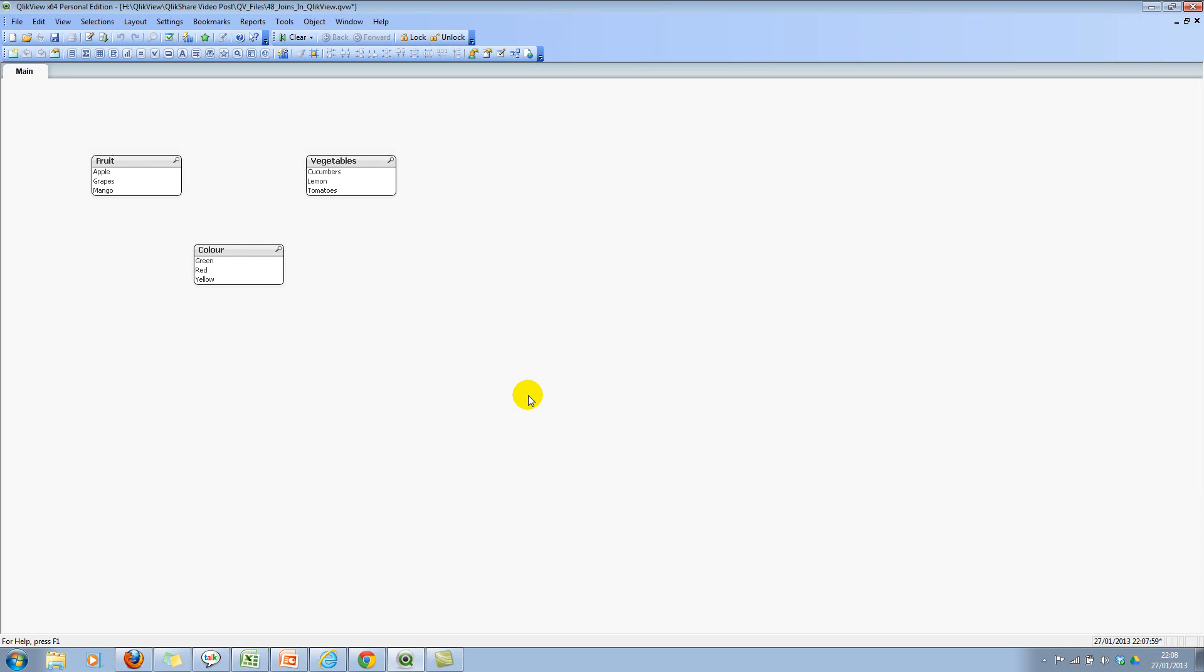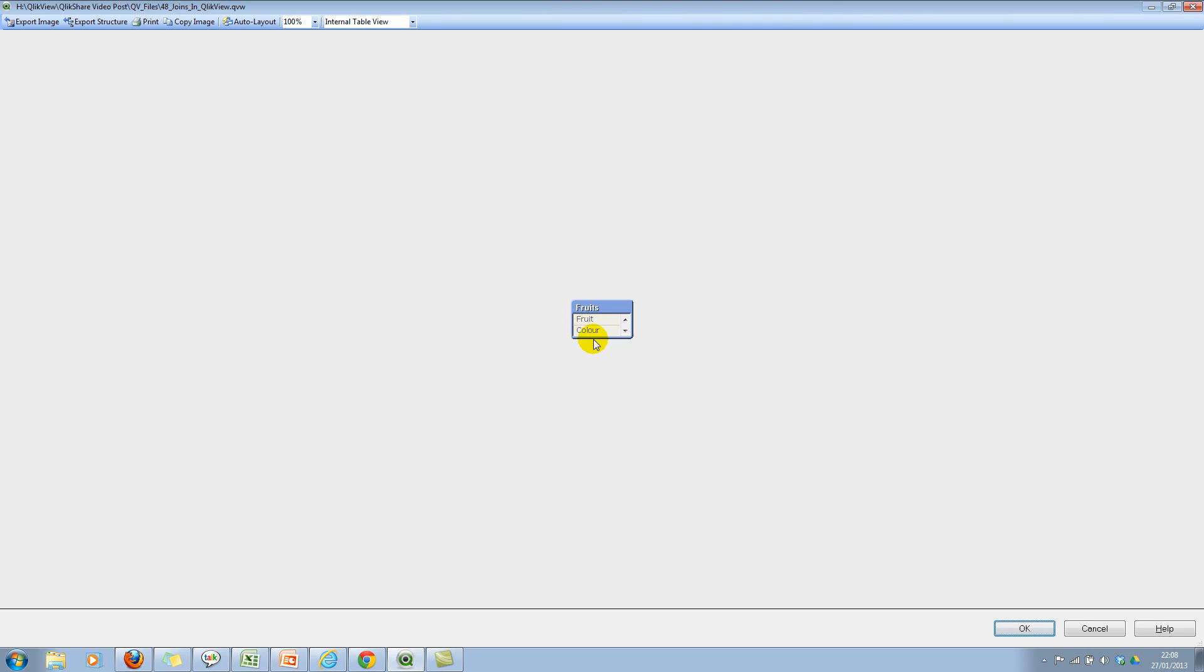Let's look at the table viewer right now. Now if you see, there is only one table and this is called fruits. This is what my fifth point is.